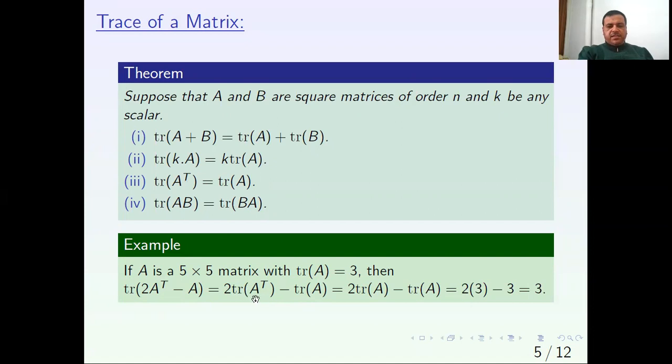Now 2 times trace A transpose - from property number 3, trace A transpose equals trace of A. So we can say 2 times trace A minus trace of A. The trace of A is 3, so the answer is 3.